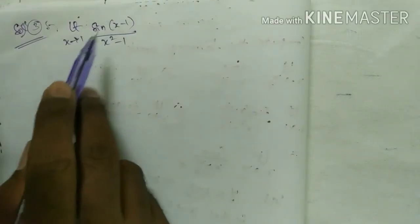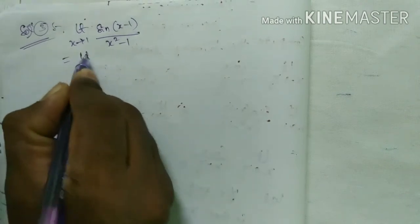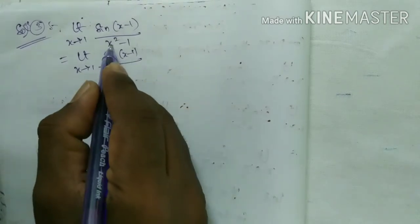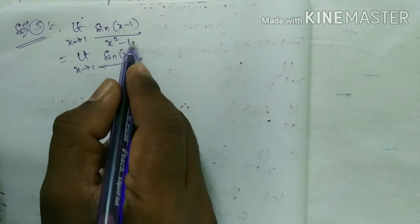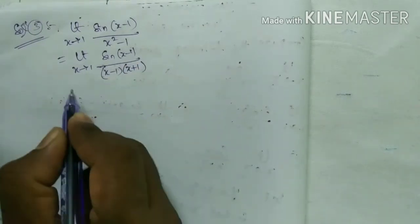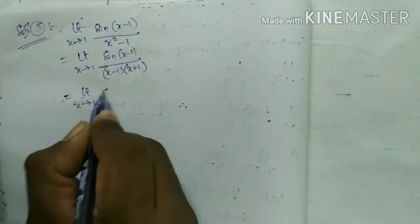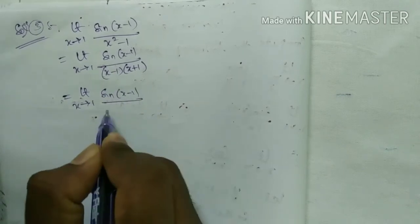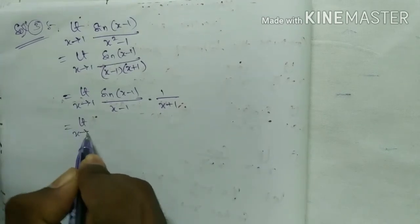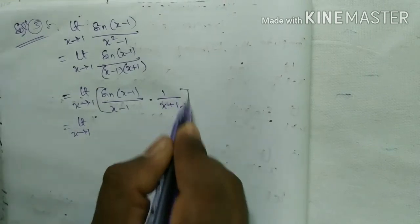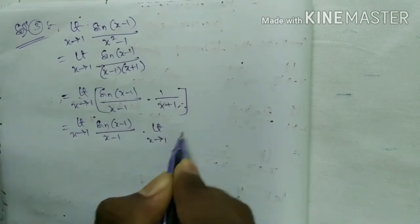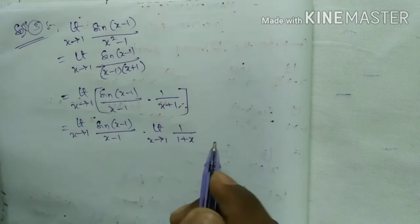Solution third one. Limit x tends to 1 of sin(x − 1) / (x² − 1). The denominator x² − 1 is of the form a² − b², so it factors as (x − 1)(x + 1). Therefore we get limit x tends to 1 of sin(x − 1) / [(x − 1)(x + 1)], which equals limit x tends to 1 of sin(x − 1) / (x − 1) × 1 / (x + 1).